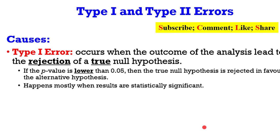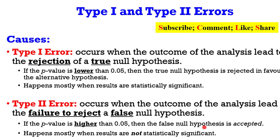This happens mostly when results are statistically significant; researchers always like to have their results be statistically significant. For type 2 error, it occurs when the outcome of the analysis leads to the failure to reject a false null hypothesis. If the p-value is higher than 0.05, then the false null hypothesis is accepted. This also happens mostly when your results turn out to be statistically not significant.